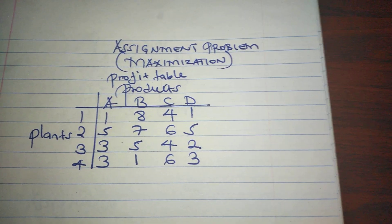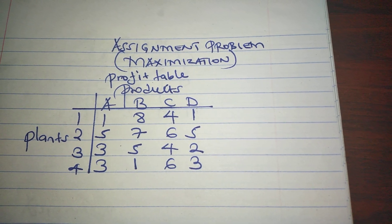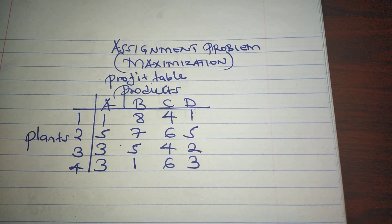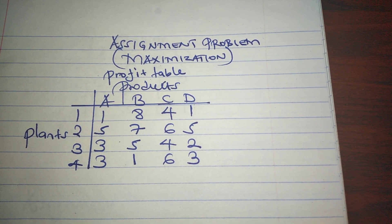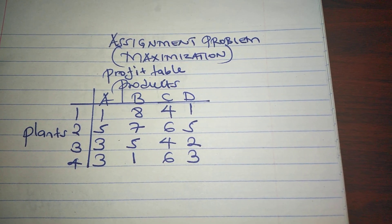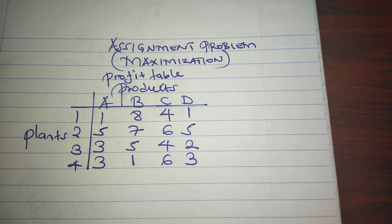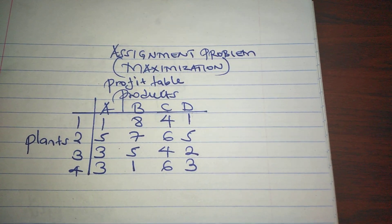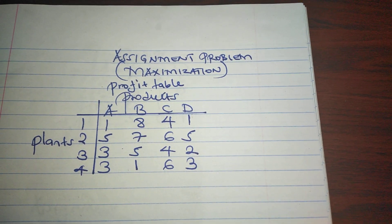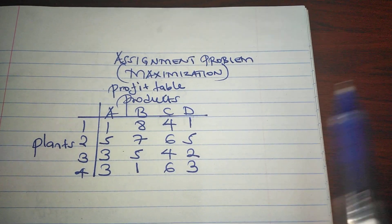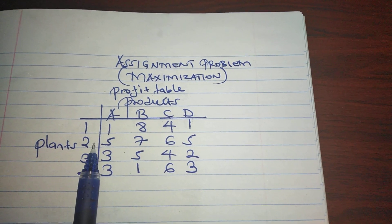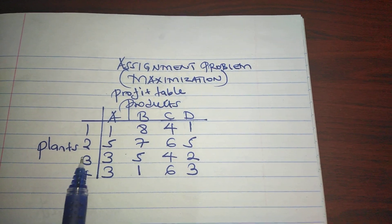Using the Hungarian method, there are steps which are followed. The first step is the largest figure is subtracted from every element in the table. So in this case, we're going to establish our largest element, which is going to be eight. So eight is going to be subtracted from every element in the table.